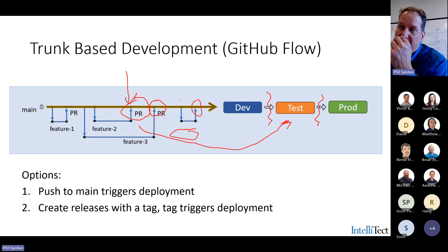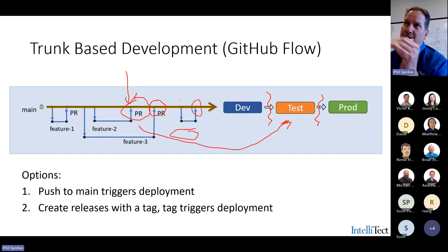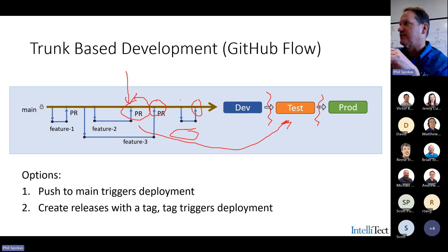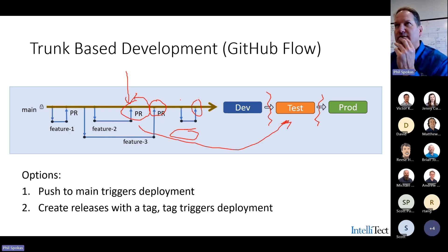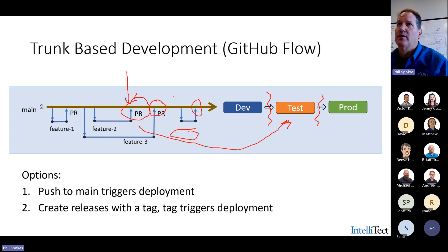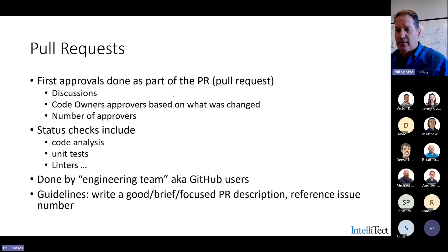There's at least one other model we implement fairly frequently with variations — where you have a default branch but also release branches. The Azure DevOps team continuously pushes, but when they're ready to release, they grab a release branch. That release branch gives them an opportunity to do bug fixes, then they merge down into their default branch and release — without worrying about the hundreds of people pushing into main on a regular basis.